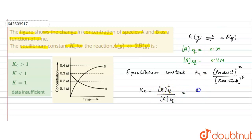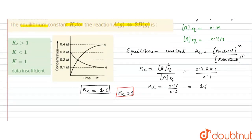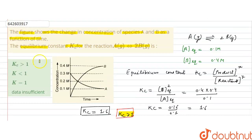Substituting the values: [B]eq = 0.4 molar, so [B]² = 0.4 × 0.4 = 0.16, divided by [A]eq = 0.1. This gives Kc = 0.16 / 0.1 = 1.6. Since Kc is greater than 1, the correct answer is option A: Kc > 1.